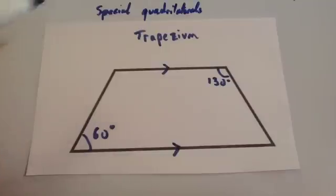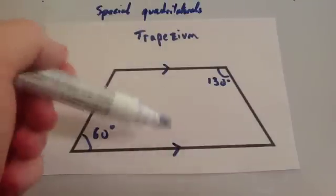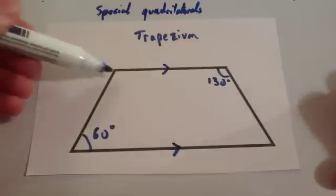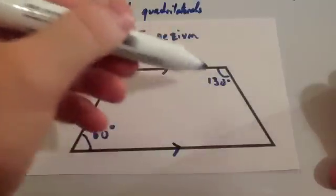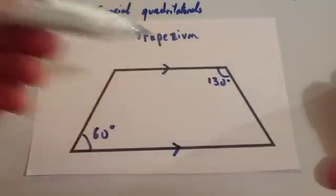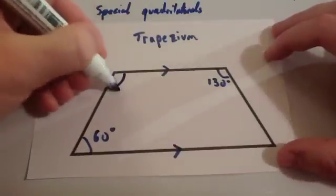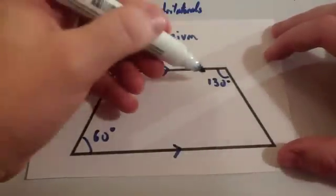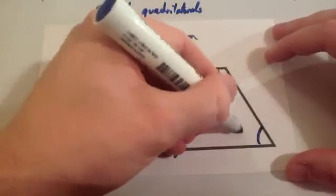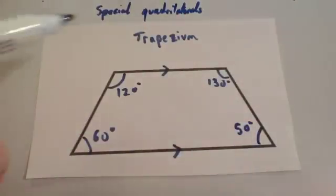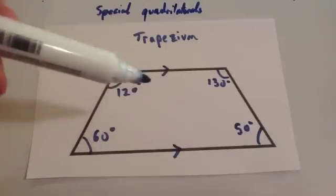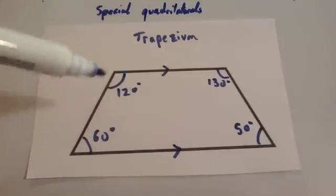For a trapezium, because you've got a pair of parallel lines, you're going to have co-interior angles. These two angles on the same side will be co-interior and add up to 180, and these two on the other side will also be co-interior and add up to 180. So if one angle is 60 degrees, the angle above it is 120 degrees; if another angle is 130 degrees, the one below it is 50 degrees. All four angles still add up to 360, and angles on the same side of the parallel lines are co-interior.